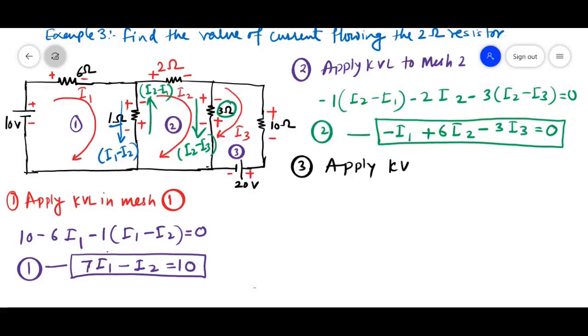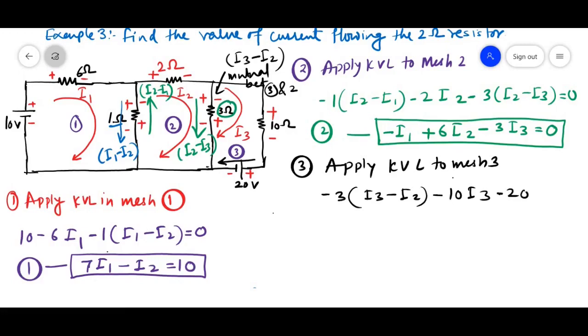Third equation, apply KVL to mesh 3. In this current flowing to this 3 ohm resistor is I3 minus I2 because this 3 ohm resistor is mutual between 3 and 2. So, it is minus 3 times I3 minus I2 minus 10 I3 and this we are going from positive to negative. So, negative voltage drop. So, it will be minus 20 equal to 0. If we solve, we will get minus 3 I2 plus 13 I3 equal to minus 20. This is our third equation.